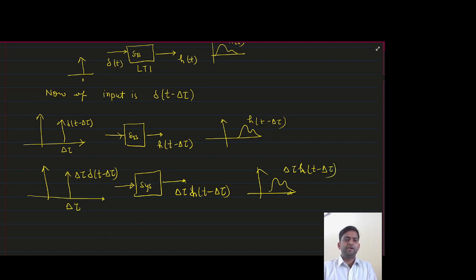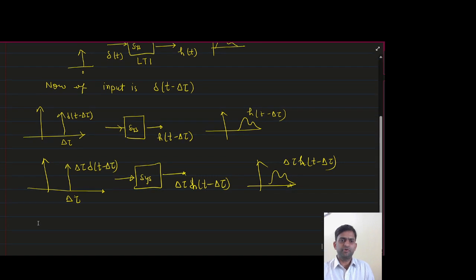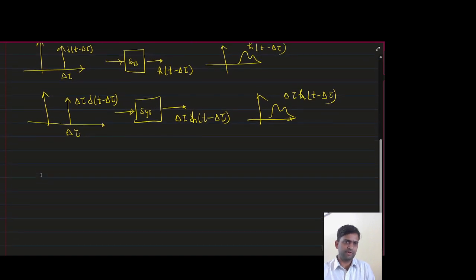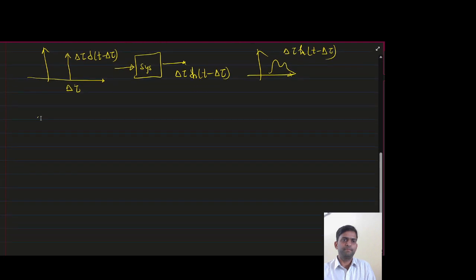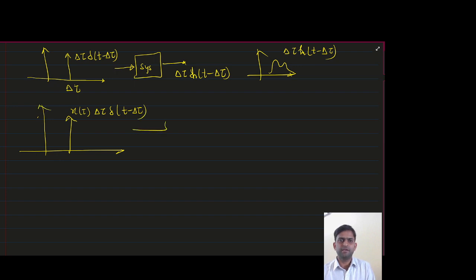Again if I multiply this input by x(tau), so now this will be impulse input which is x(tau) delta tau delta(t - delta tau). So if I again scale, then output will also be scaled again. So output will be x(tau) delta tau h(t - delta tau).